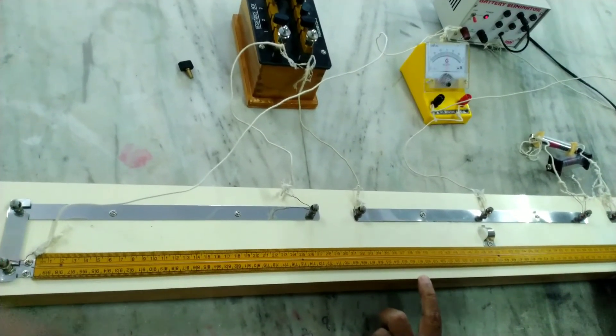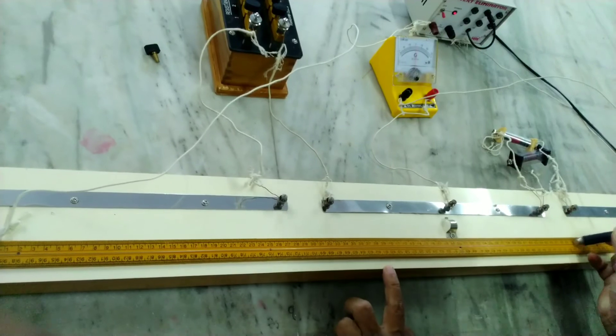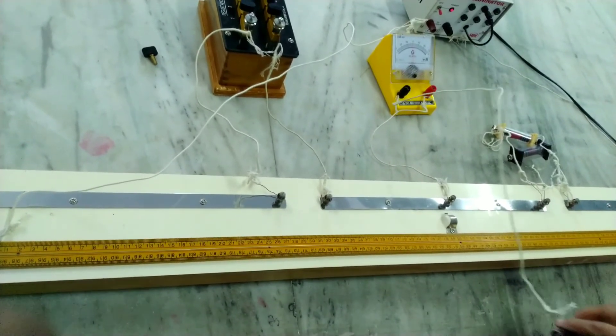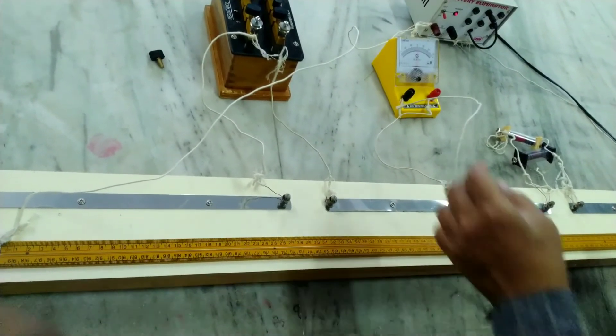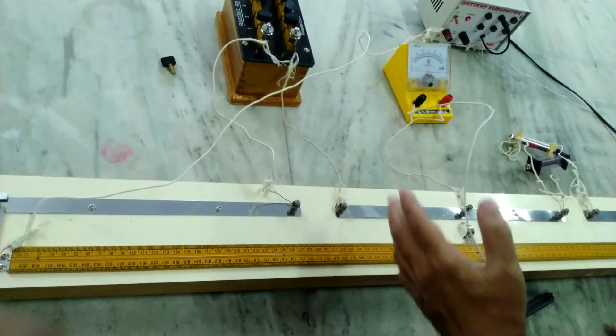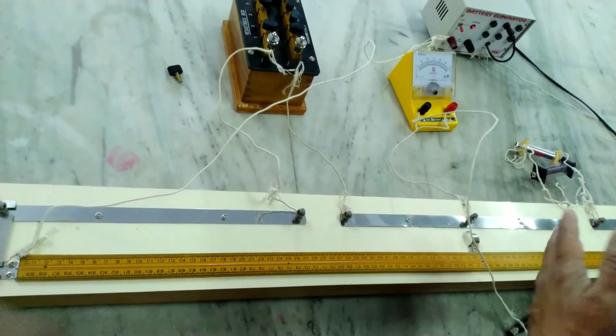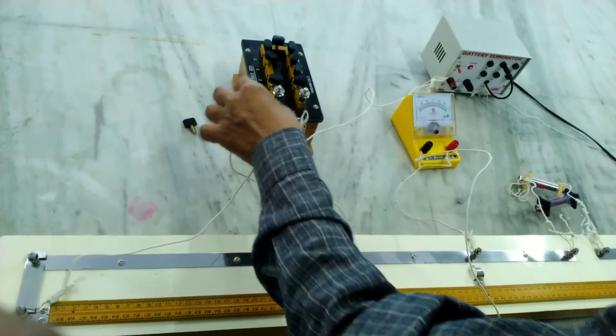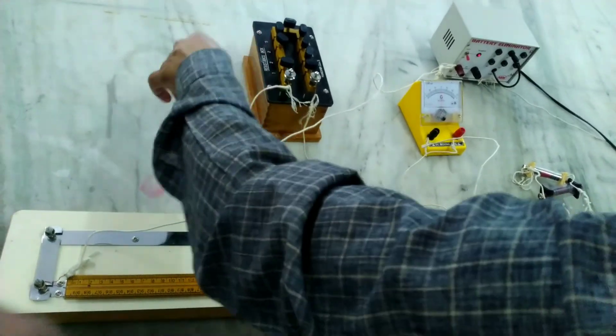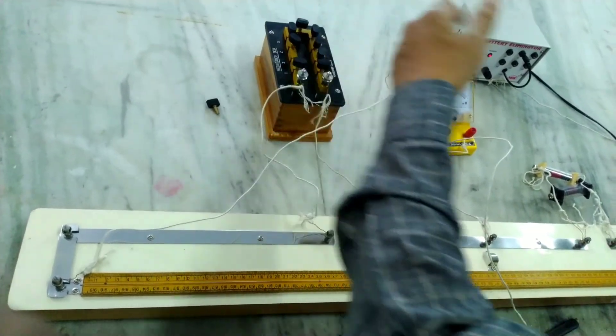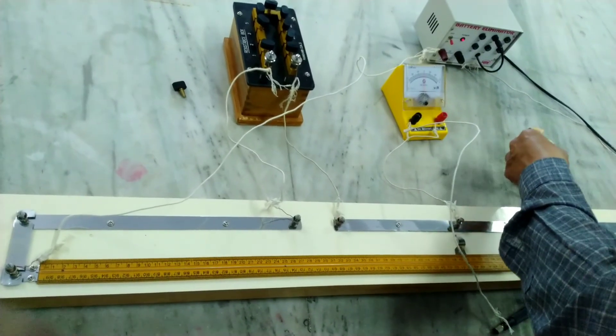The balance length is 70 centimeters. By applying Wheatstone's principle, P/Q equals R/S. So, the value of resistance Rb, that is 2 ohms, divided by the value of parallel grouping of R1 and R2.